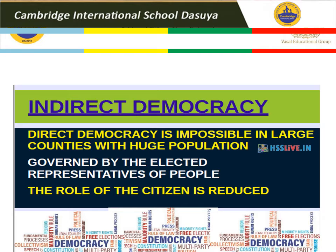Does the citizen have a limited role in taking major decisions in running the administration? They are not very actively involved in the making of policies. Citizens are involved only indirectly through their elected representatives. In this arrangement, where all major decisions are taken by elected representatives, the method by which people elect their representatives becomes very important. You will find the same topic in your NCERT book, page number 53, and while writing, you have to elaborate the answer.